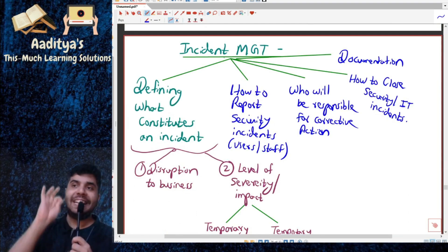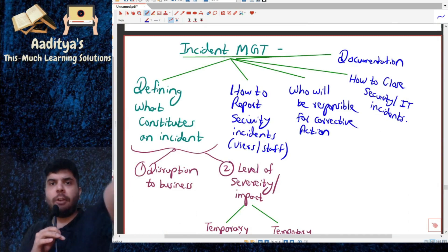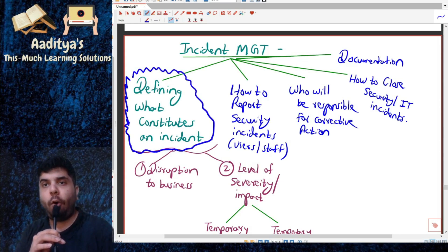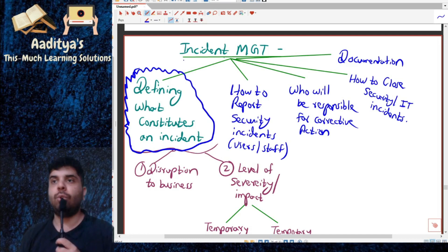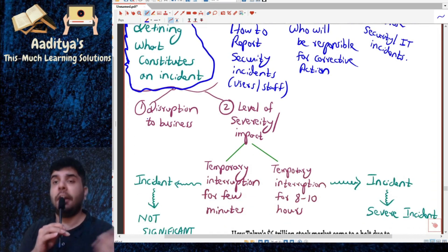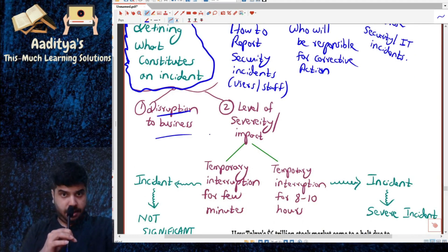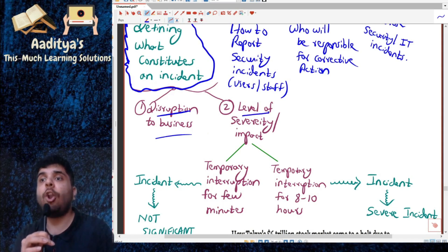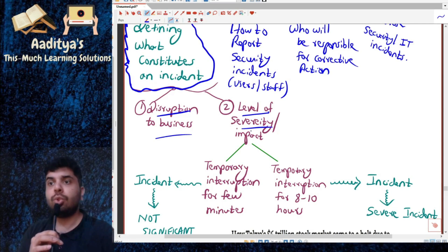When we talk about incident management, we will be discussing a few things. The first thing is defining what constitutes an incident. Whether there is disruption to business — if there is disruption to business, it is an incident. But you also have to see the level of impact and the severity of the impact on our business.